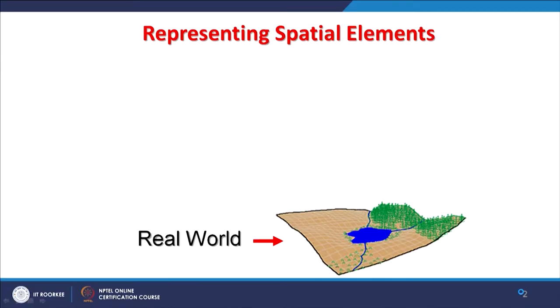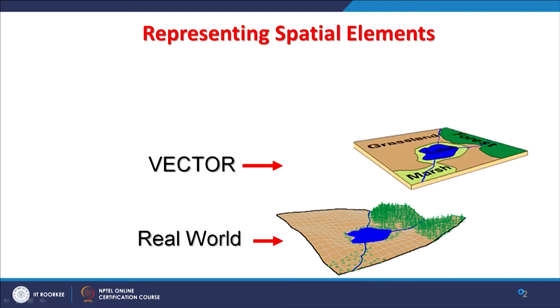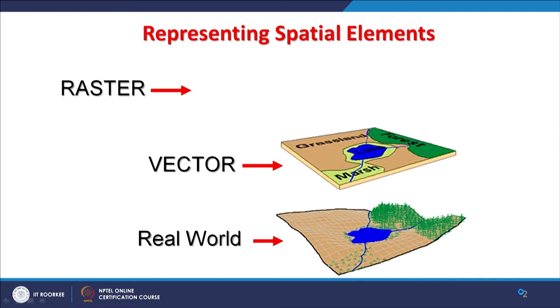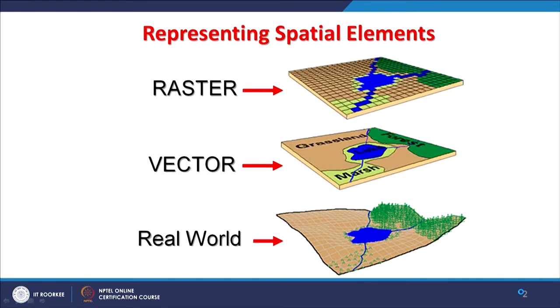So, vector data, raster data — there are different types of vectors and rasters — and also one more type is the TIN data, along with attribute data or non-spatial data. In this discussion, we will focus on the vector data itself. This part, just to connect with the previous discussion, is that the real world can be converted either into vector or raster.